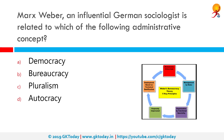Marx Weber, an influential German sociologist, is related to which of the following administrative concepts? The correct answer is bureaucracy. According to the bureaucratic theory of Marx Weber, bureaucracy is the basis of the systematic formation of any organization and is designed to ensure efficiency and economic effectiveness. It is an ideal model for management and its administration to bring an organization's power structure into focus.